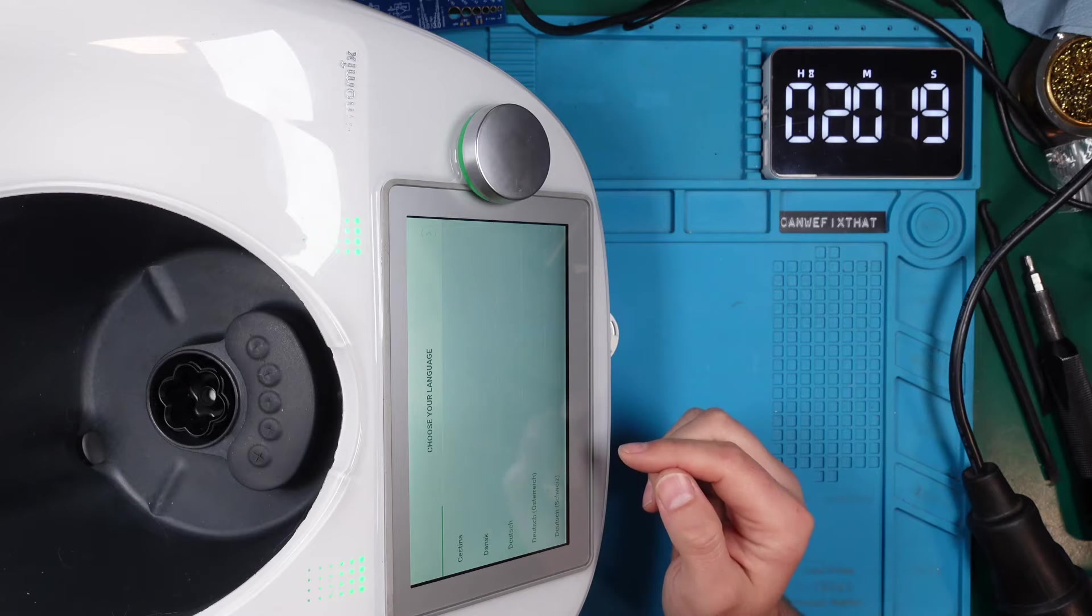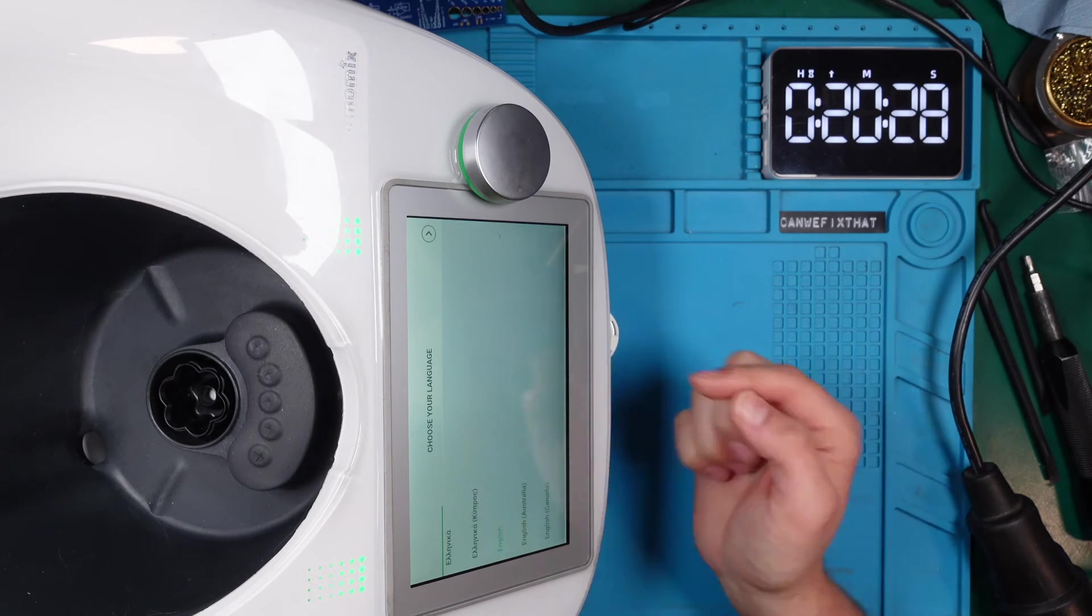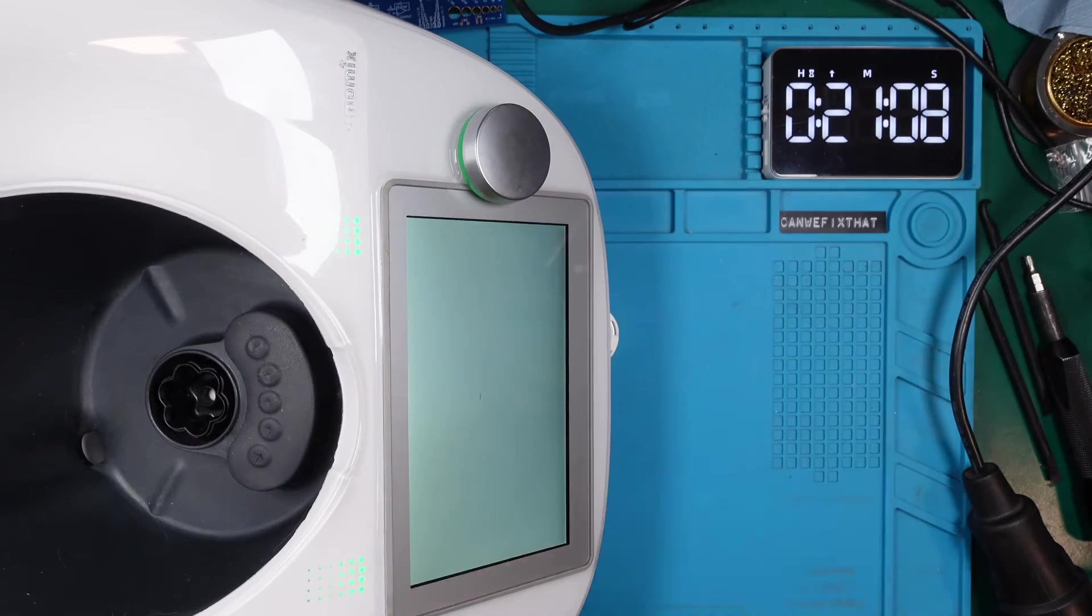The language screen pops up and it seems like the touchscreen works perfectly well. But what about the knob on the front? Does it work too?